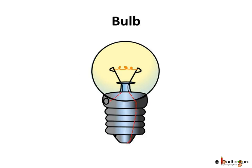The filament is fixed to two thicker wires which also provide support to it. One of these thick wires is connected to the metal case at the base of the bulb. The other thick wire is connected to the metal tip at the bottom center of the base.